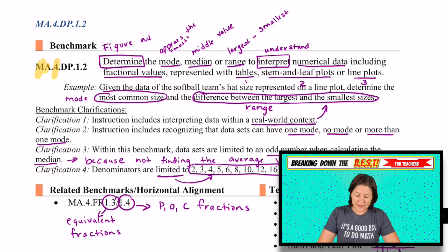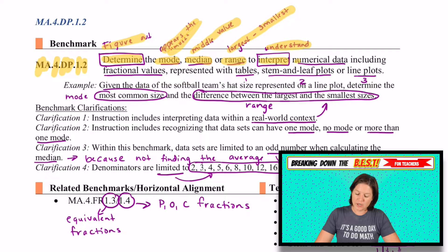Today's standard is MA.4.DP.1.2. And it says to determine, which means to figure out, the mode, which is the amount that appears the most, the median, and the range, where we subtract the largest number minus the smallest number in order to interpret or understand numerical data.